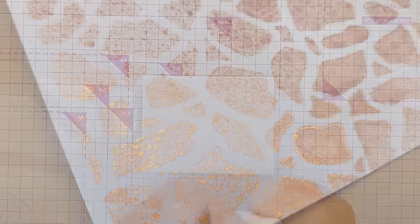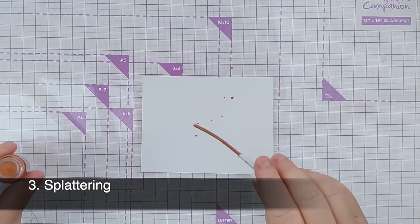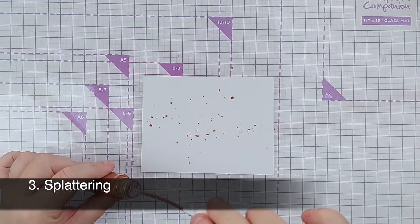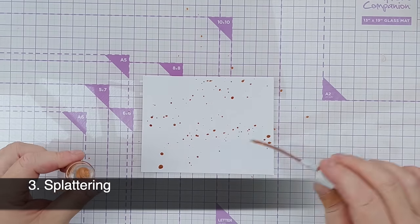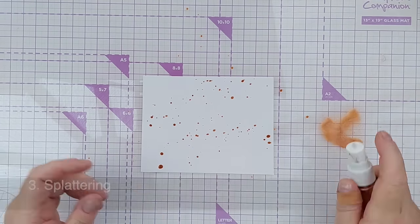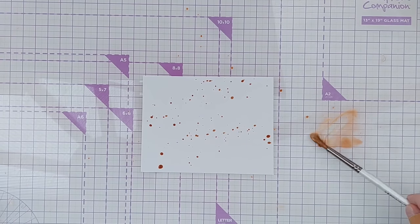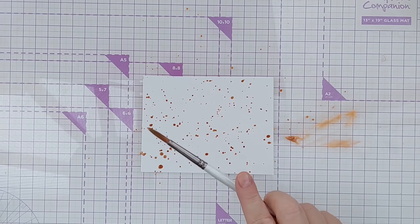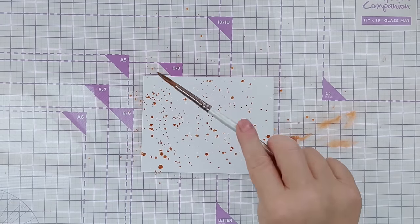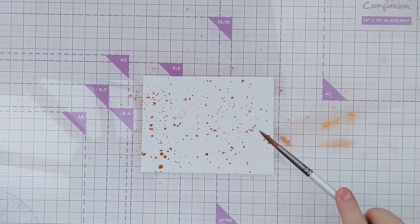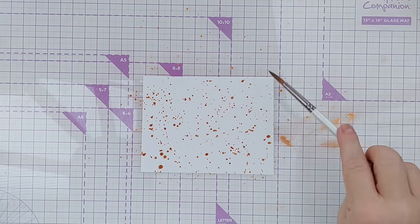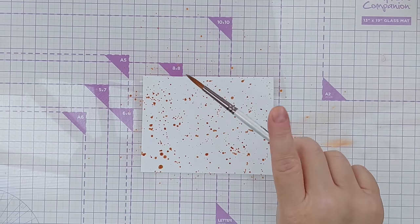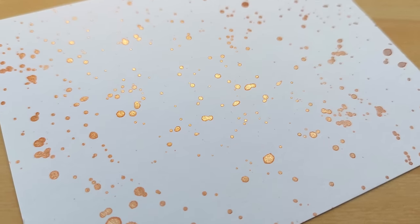Technique number three is spattering. To start off, I unscrewed the nozzle and then tapped the nozzle so that the pipe dripped shimmer all over my piece of paper. You can also do the same thing with a paintbrush. Just put some of your shimmer spray on a palette, take a moist paintbrush, pick it up, tap the paintbrush, and you will get some shimmery splatters.